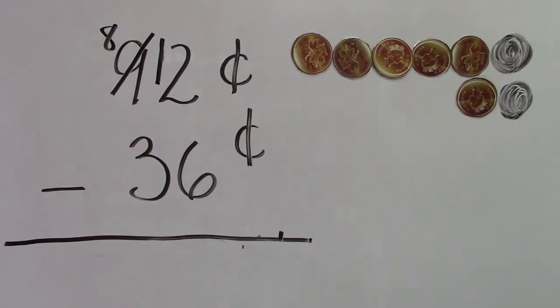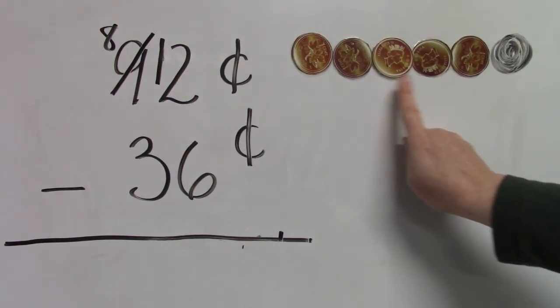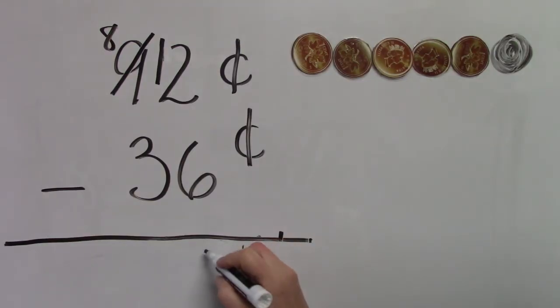One, two, three, four, and five, six. How many pennies do we have left? One, two, three, four, five, six. Twelve take away six is six.